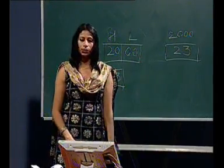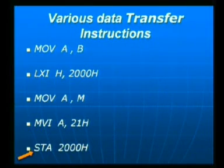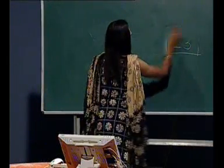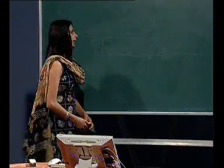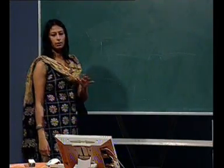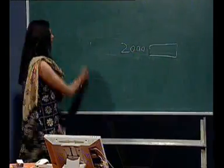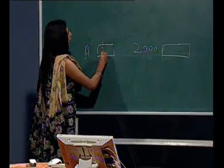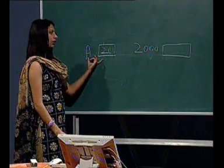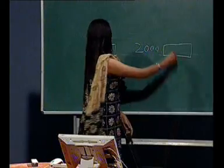The next instruction is MVI A, 21H. In this case, data is directly specified in the instruction, so the data 21 will be directly transferred to register A. The last instruction is STA, that is Store Accumulator. In this case, the contents of the accumulator will be transferred to the memory location mentioned in the instruction. In this case, the location is 2000. So if the contents in the accumulator are 20, after the execution of this instruction, the contents of memory location 2000 will be 20.